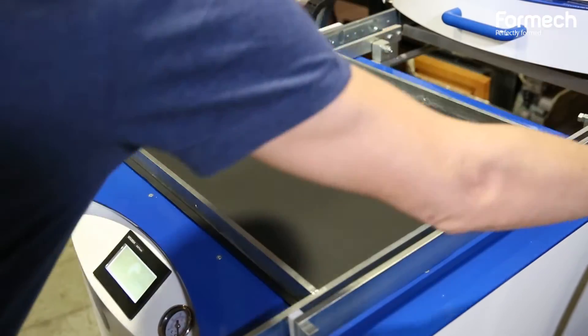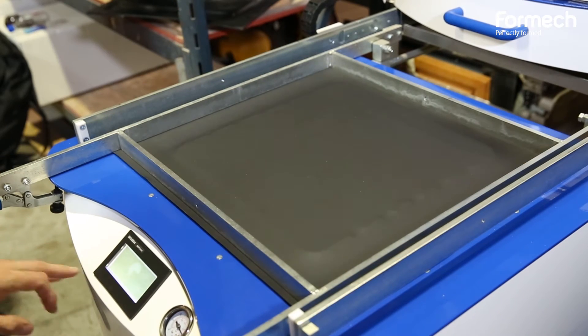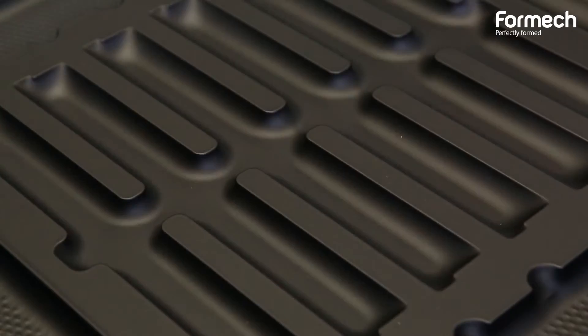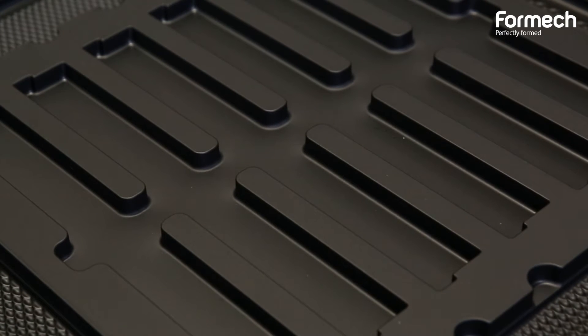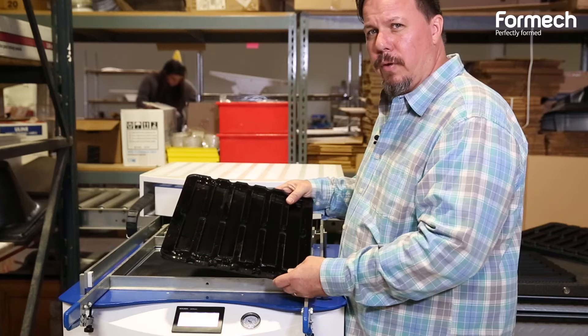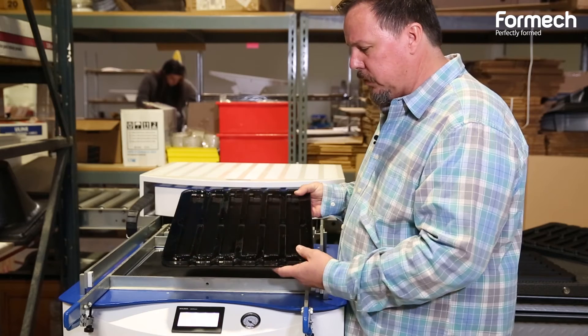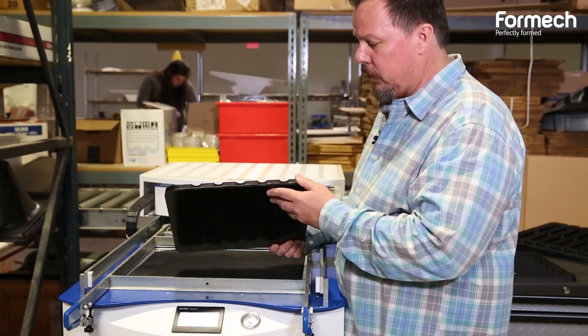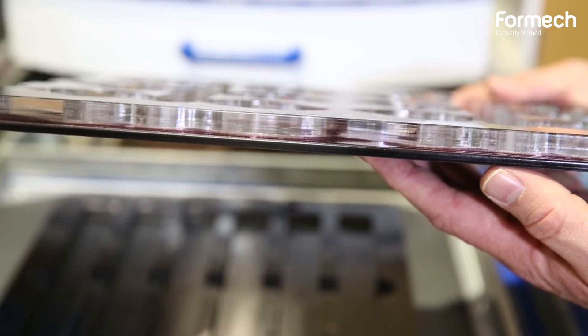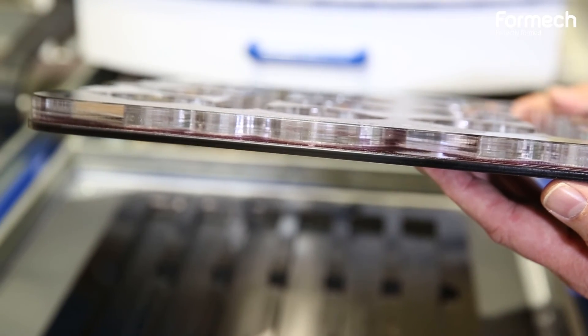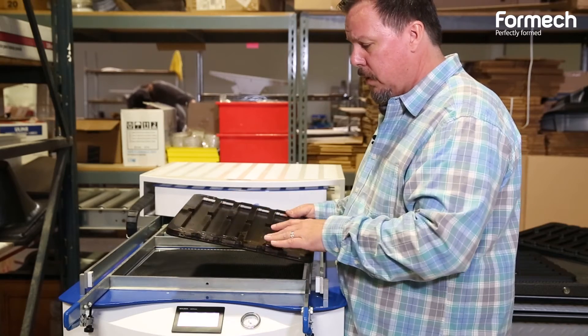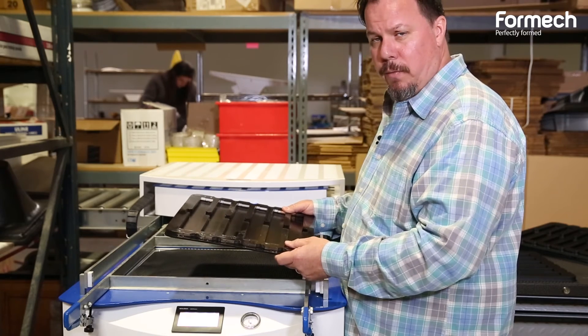And what we do here is we have a laser cutter and we design all of our tooling in-house and we just laser cut it in layers, almost much like a sandwich. So we'd have our bottom layer that would have our holes for vacuuming and then we would have the other layer that would be the form.